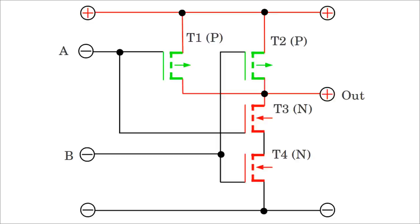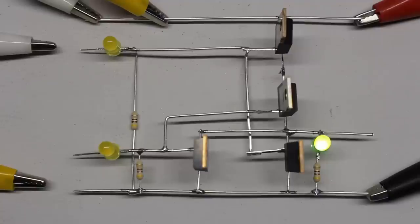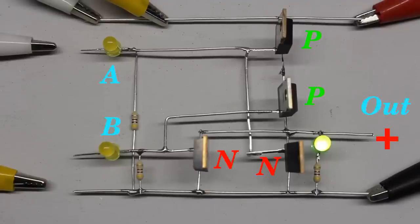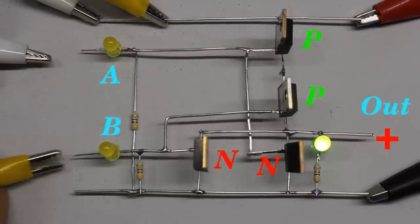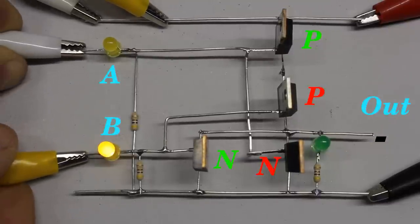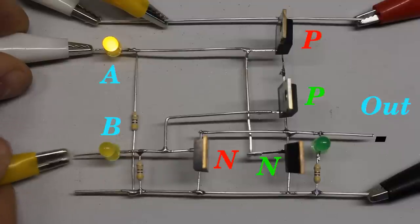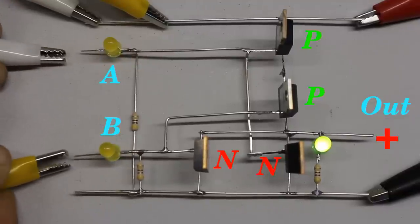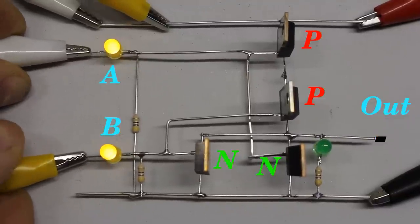If both inputs are low, the two N-channel MOSFETs are turned off while the P-channel MOSFETs are turned on. Once more there is a conductive path between the output and the positive supply voltage, while none of the N-channel MOSFETs between output and ground conduct. The functionality of the CMOS NOR gate is very similar to that of the NAND gate. Again, each input is connected to the gate of one N-channel and one P-channel MOSFET. In contrast to the NAND gate, the two N-channel MOSFETs are switched in parallel while the P-channel types are switched in series.